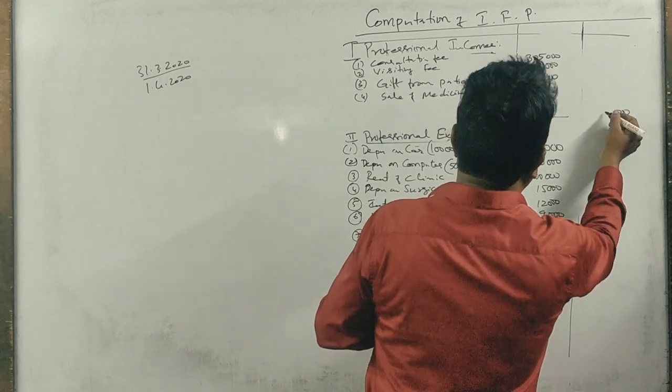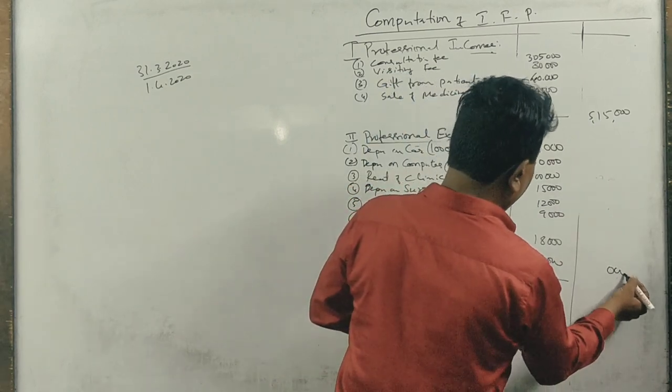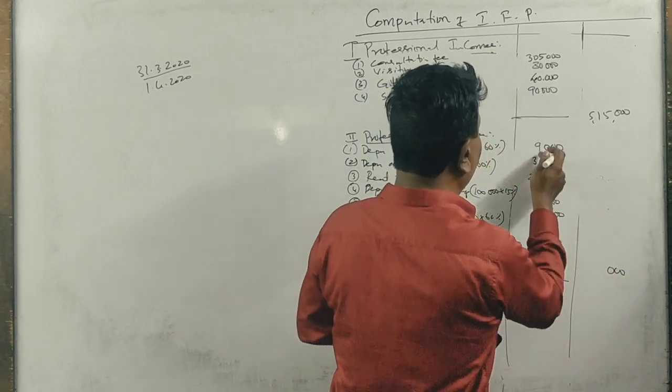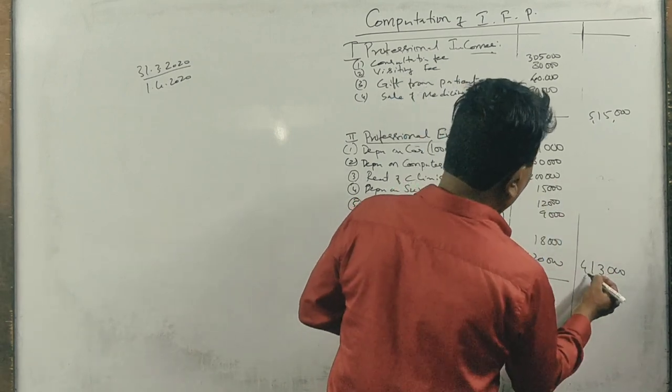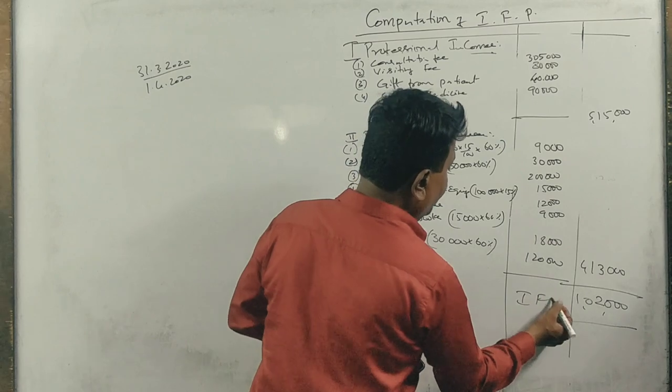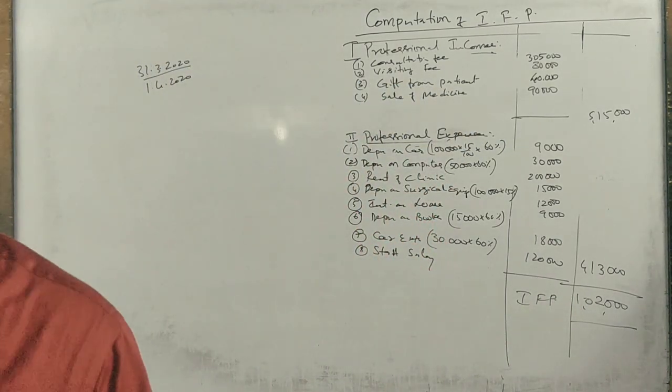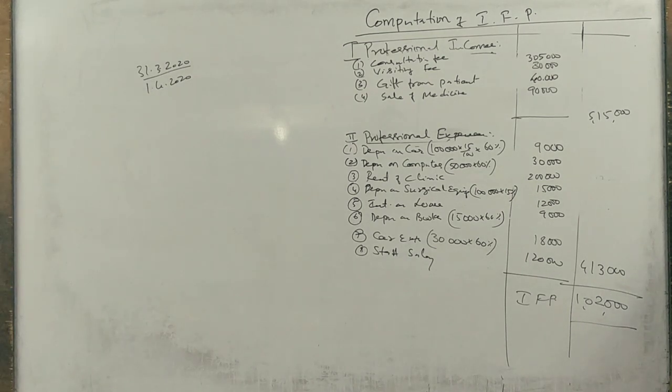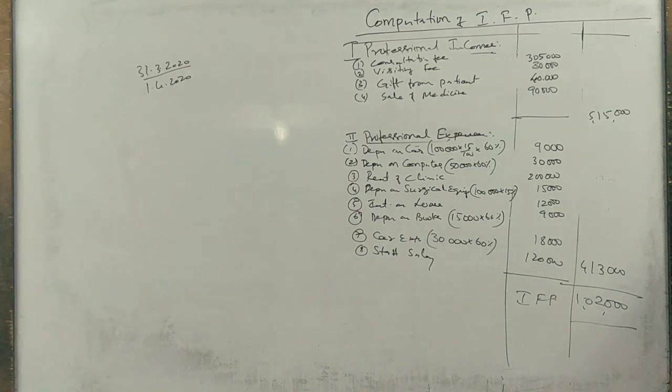Now check the totals: 13,21,000, 5,50,000, 8,70,000, 19,24,330 - correct. Income from profession: 4,97,670.